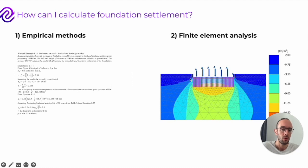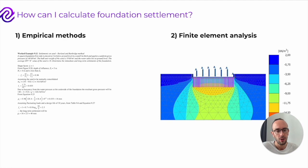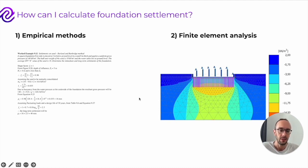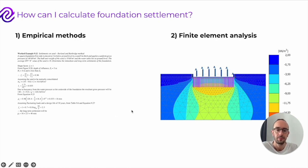For more advanced cases — for example, where you have a soft pocket of ground on one corner — you can run finite element analysis. Nowadays this is slightly more common with the software we use. But empirical methods are still very useful, especially in the feasibility and early stages of construction projects.